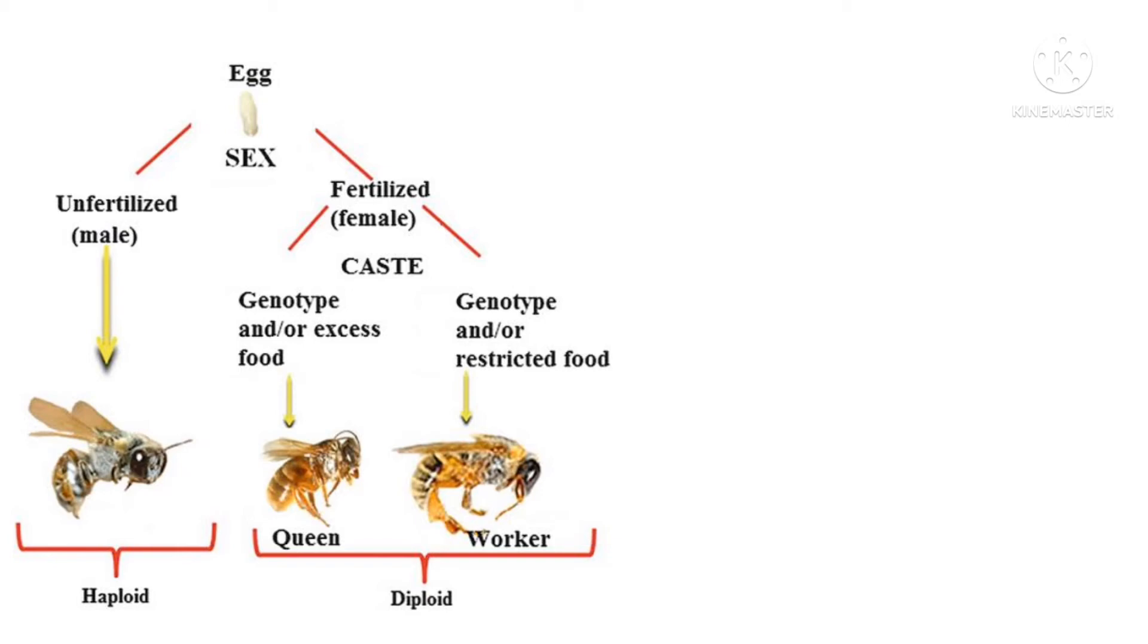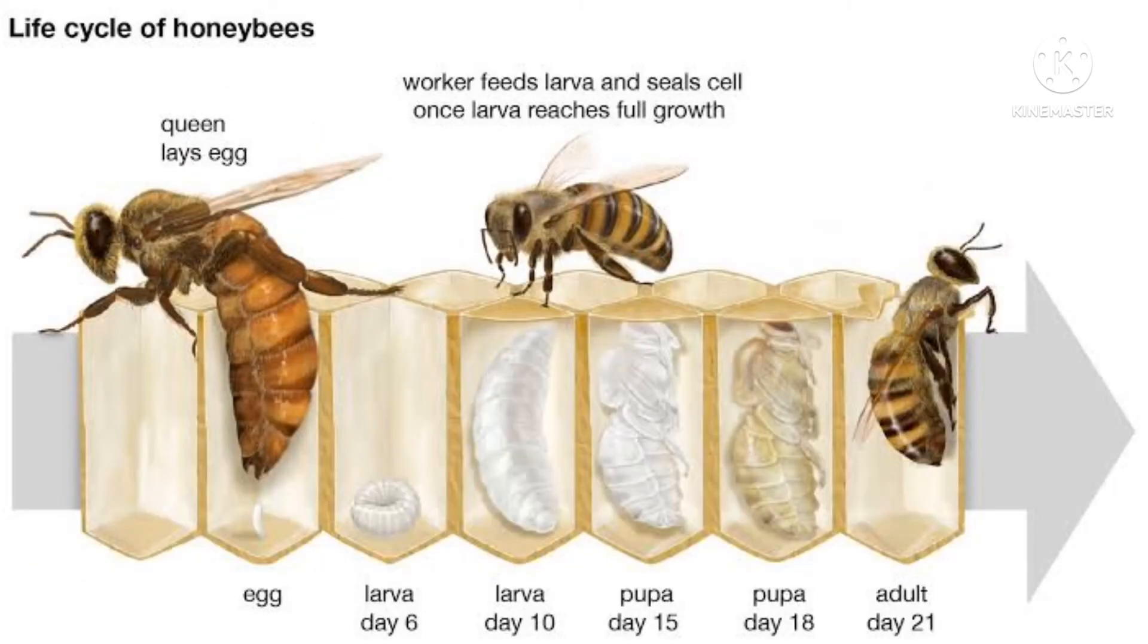The queen is the biggest member of the hive in size. The next in size are the drones, which are second. The workers are the smallest.